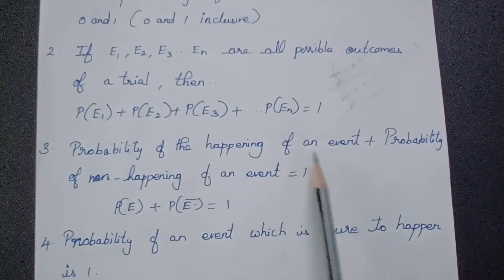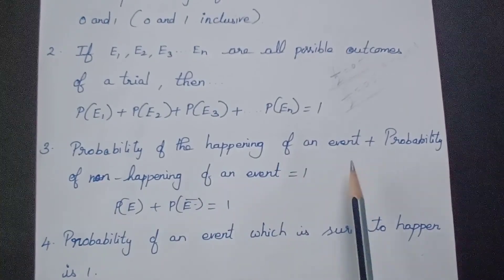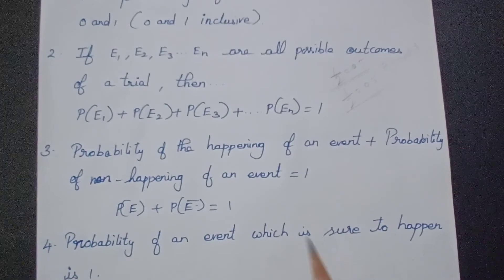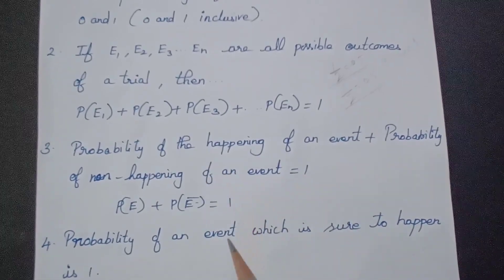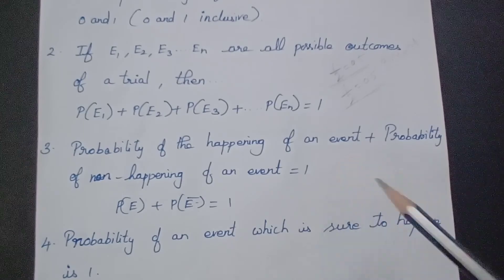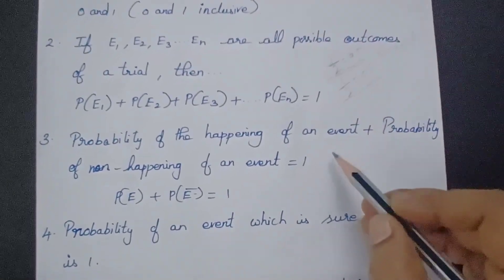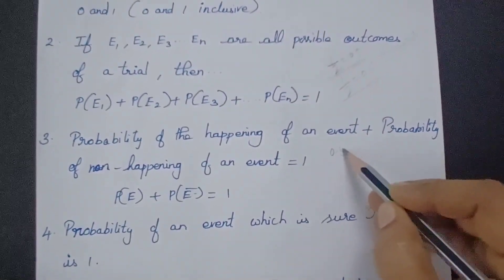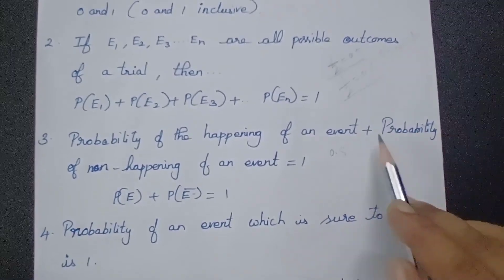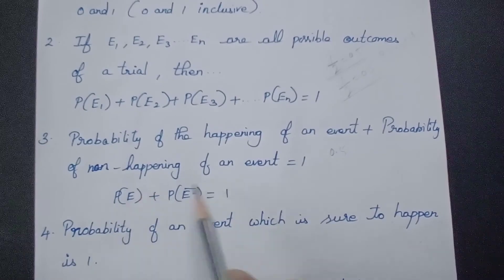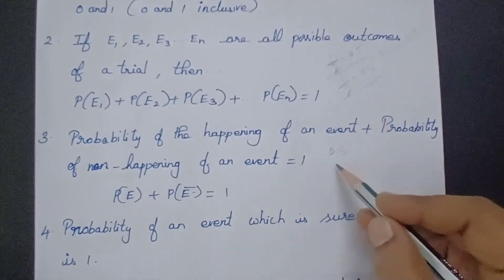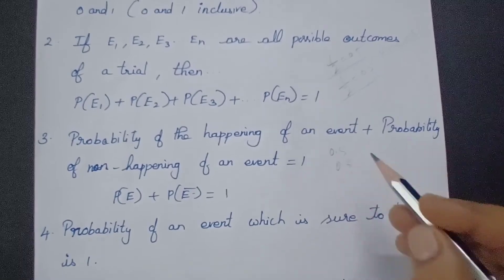The probability of happening of an event: for example, I want a head when I toss a coin. The probability of getting a head is 1/2, equals 0.5. Plus the probability of not happening of the event — a tail comes — which is also 1/2, equals 0.5.